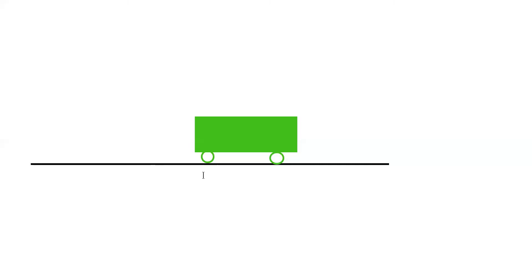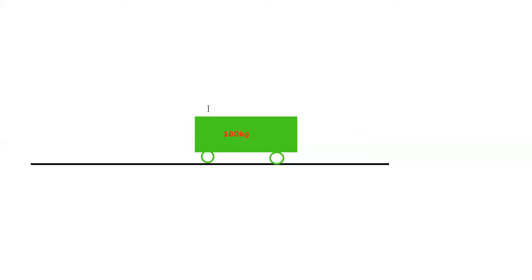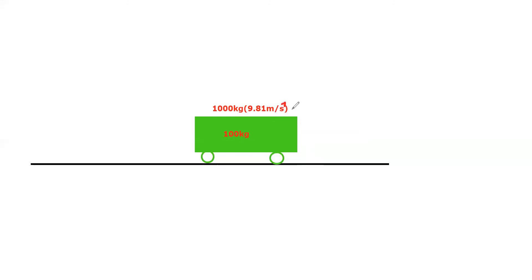Tenemos aquí un carrito que está en reposo. Este carrito pesa nada más y nada menos que 100 kilogramos. Si yo quiero saber cuál es su fuerza, entonces tengo que multiplicar su peso o masa por la gravedad, 9.81 metros sobre segundo al cuadrado, y eso me da un resultado de 981 newtons.